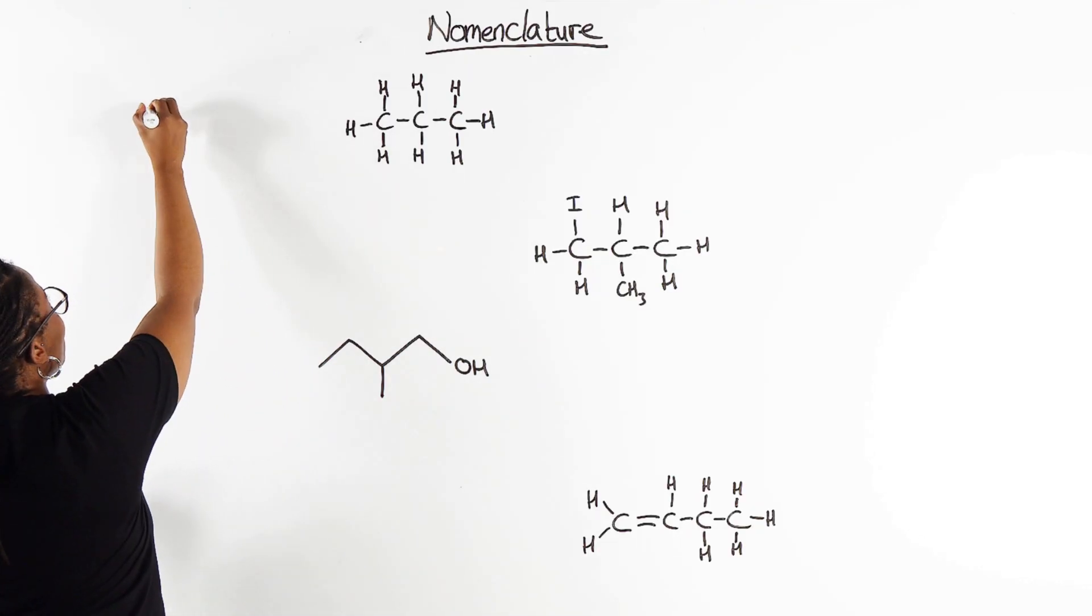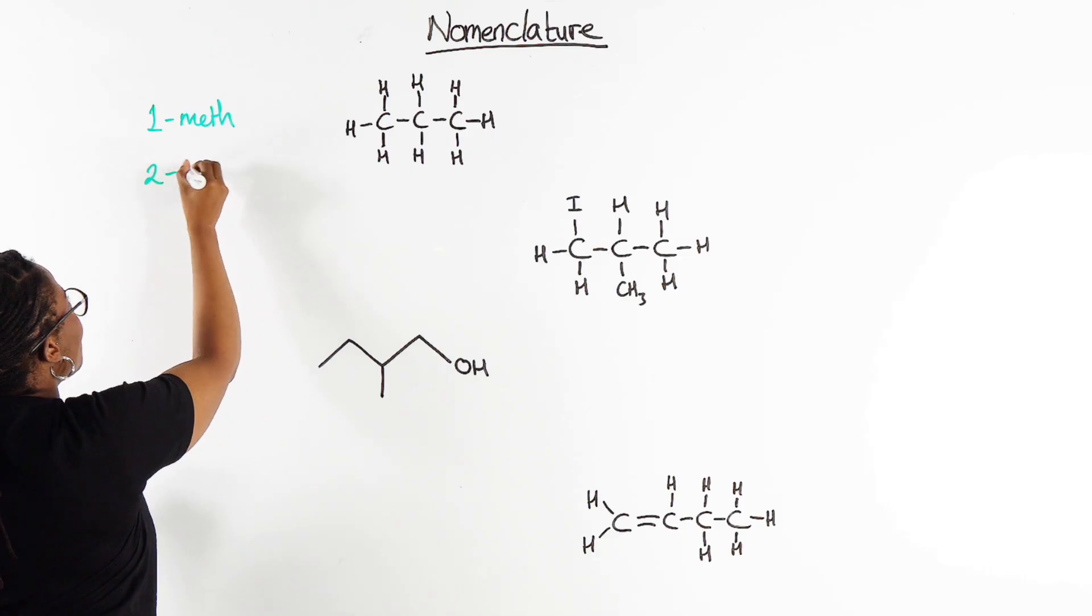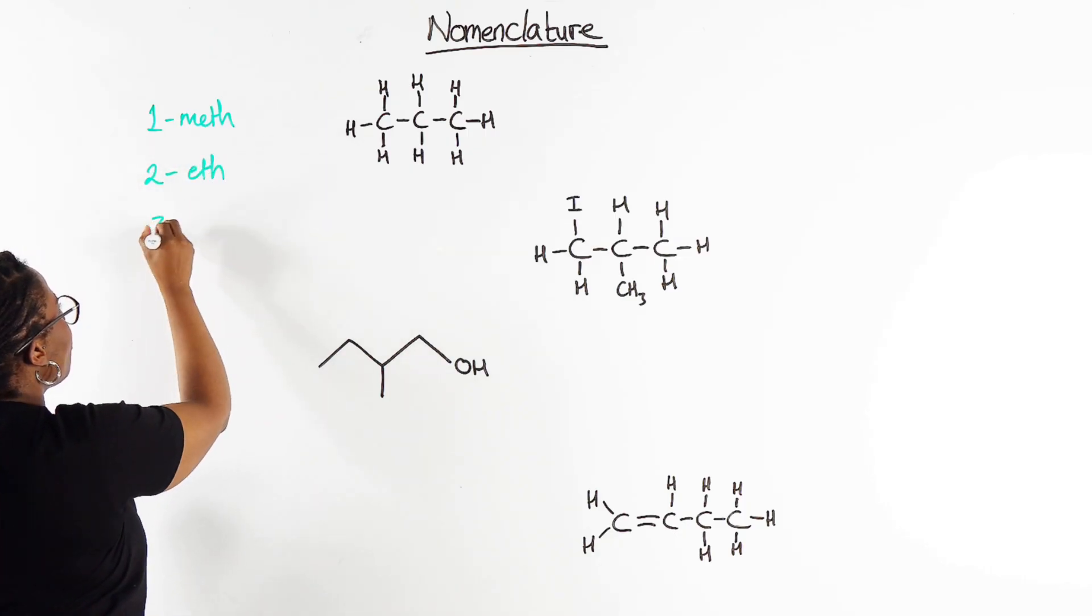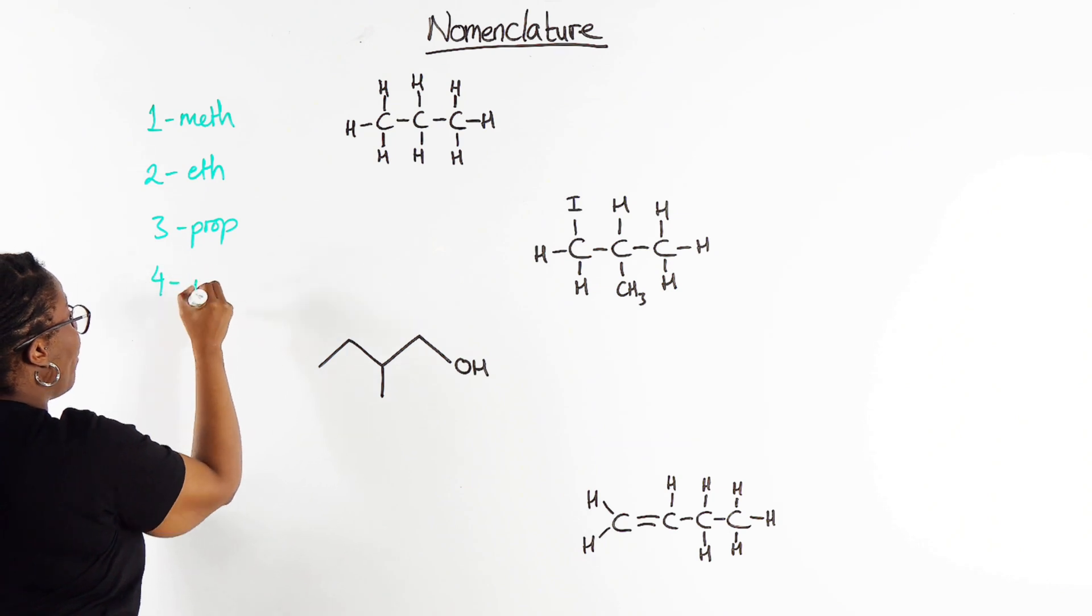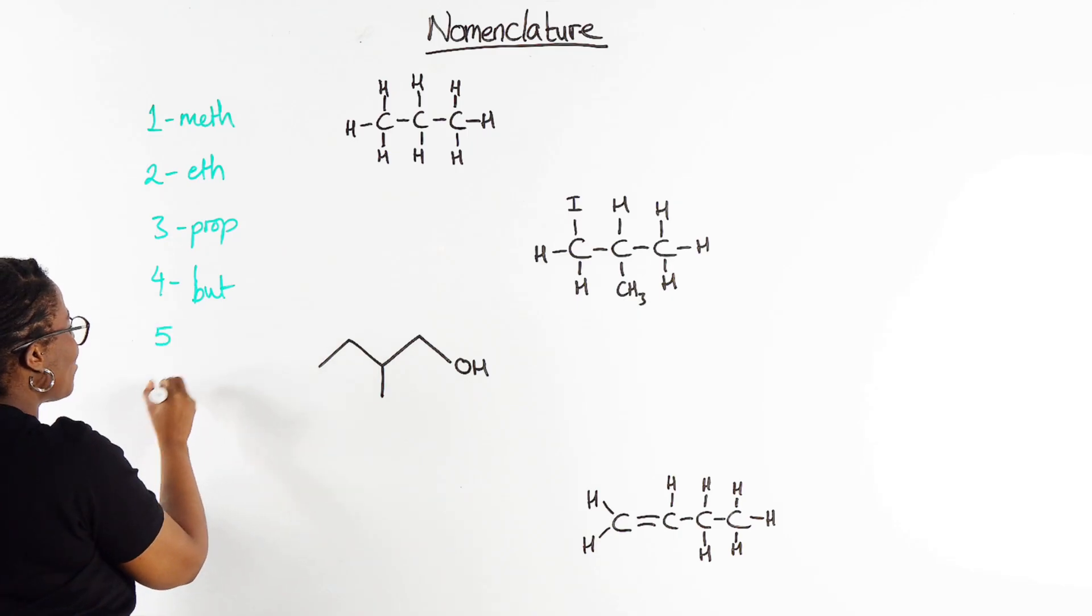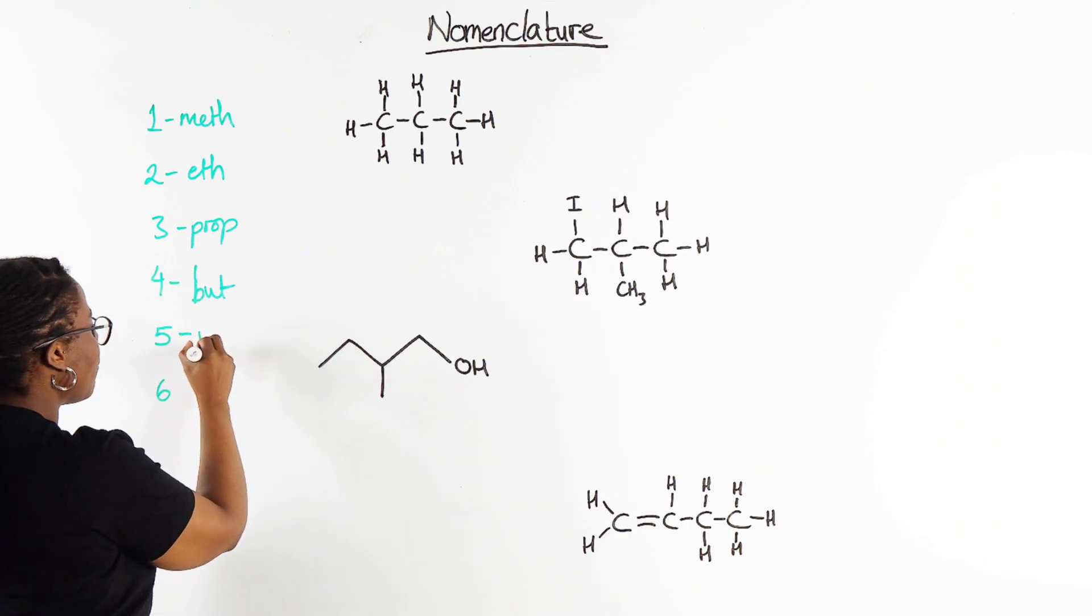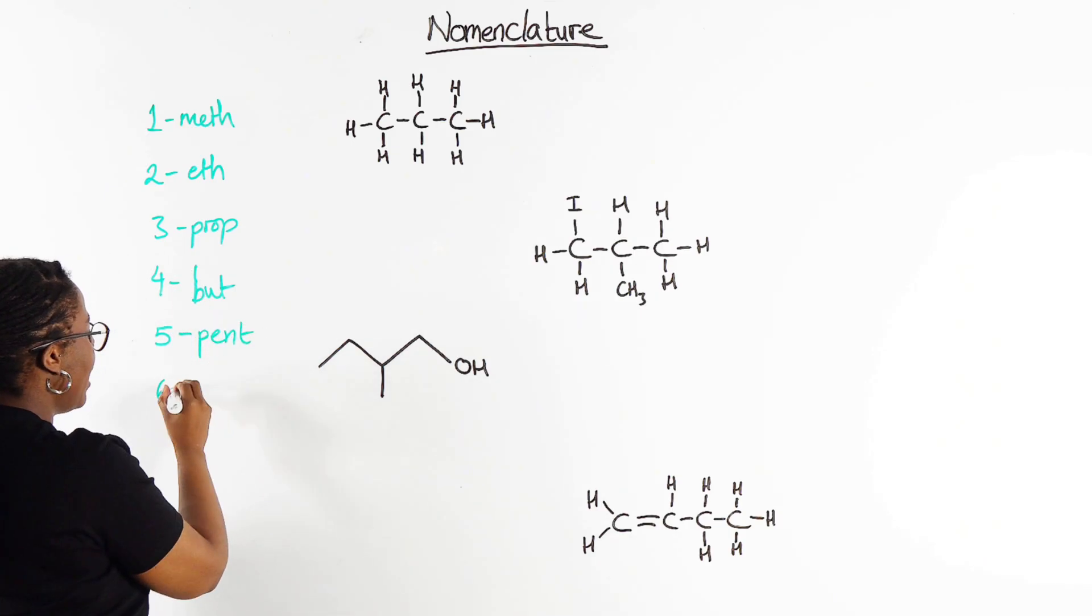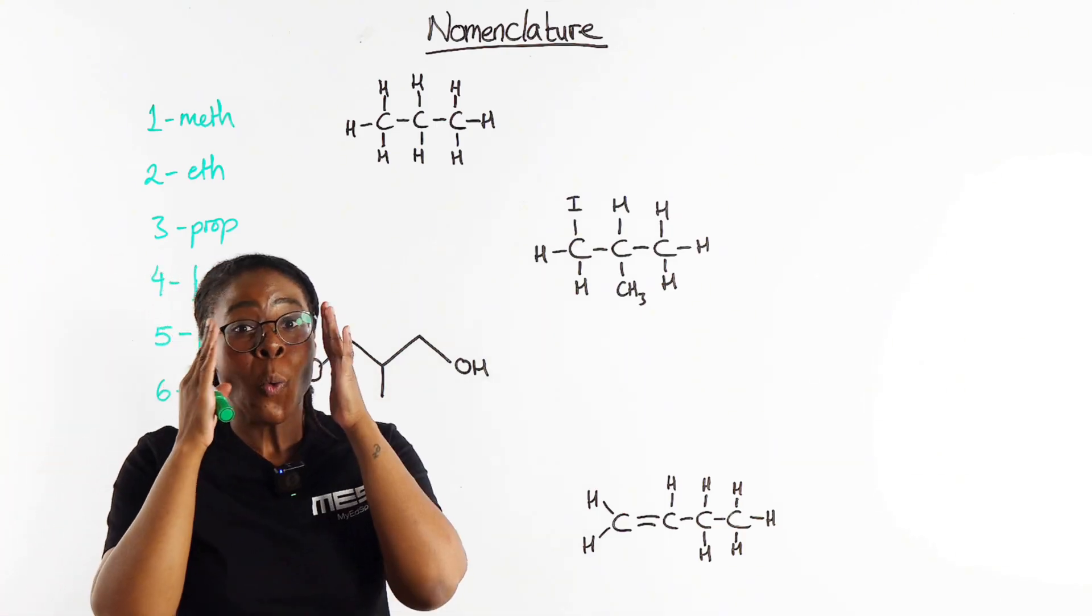Those are, of course, if we've got one carbon that is meth, two carbons is eth, three prop, four but, and then five and six that's where we get to prefixes that we're used to. So five of course is pent like pentagon and then six hex like hexagon.